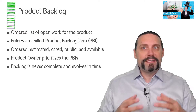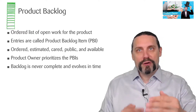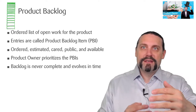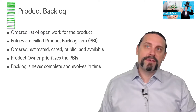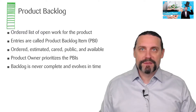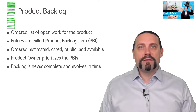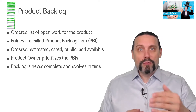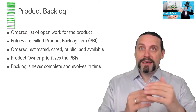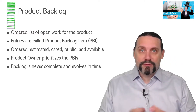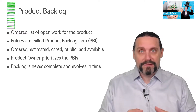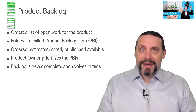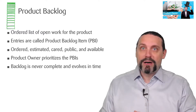The product backlog is an ordered list of open work for a specific product. On top we have all the refined items, and on the bottom we have the less refined or not yet refined items. A product backlog consists of product backlog items and they are all ordered. They are estimated at the top, and the product owner takes care together with the team about these product backlog items. Such a product backlog is always transparent and publicly available.